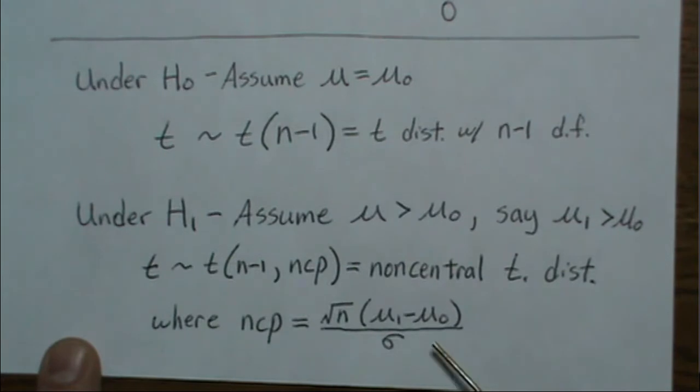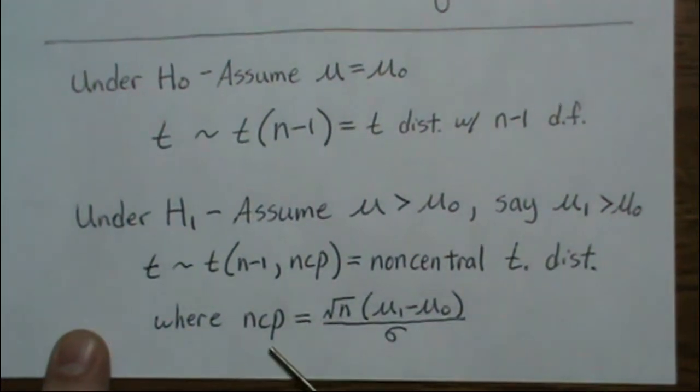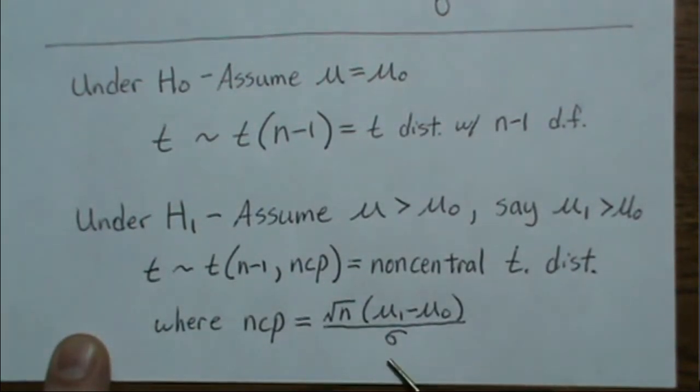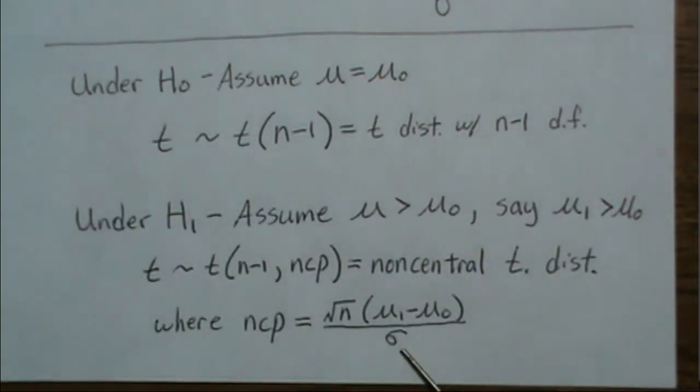The most intriguing part is this non-centrality parameter determines the shape of the non-central t-distribution. The larger this value is, the more it's shifted to the right. If it's negative, the more negative it is, it's shifted to the left. How to make this larger? You increase n. That increases power. What it's doing from a distributional standpoint is shifting the non-central t-distribution to the right, increasing power.